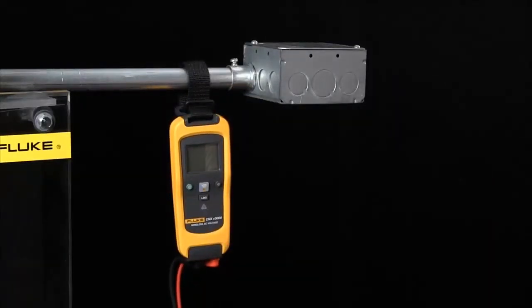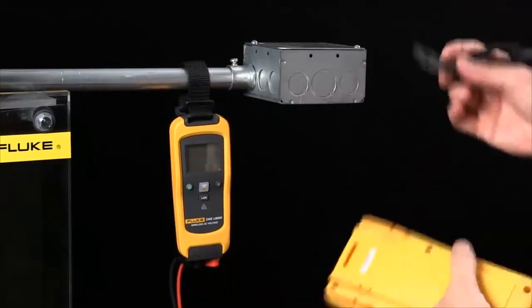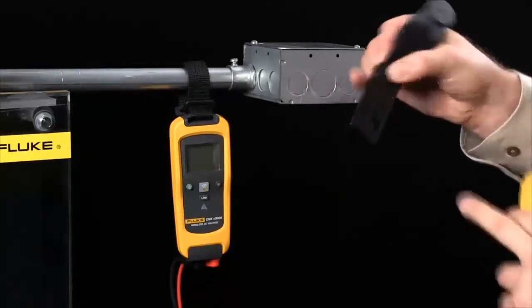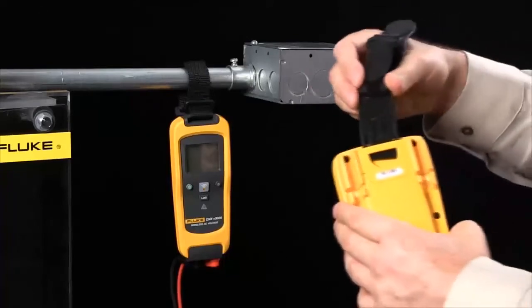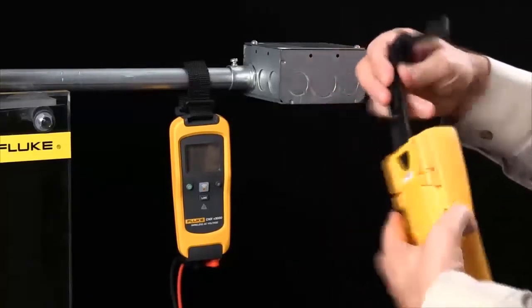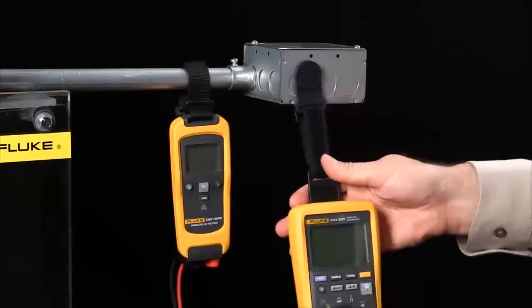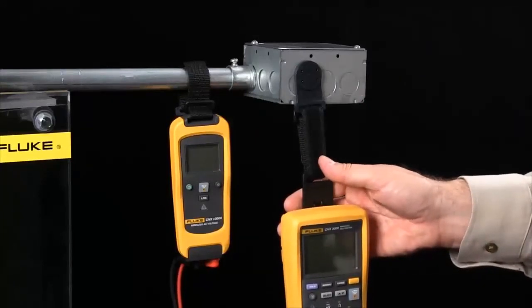Also recall that the TPAK system will work with any Fluke meter. We include this plastic piece with every single kit. Simply snap it into the back of any Fluke multimeter and now you have the ability to use hands-free operation.